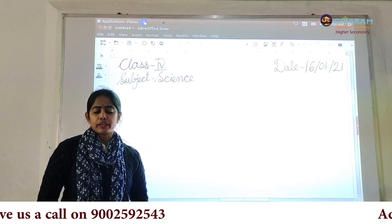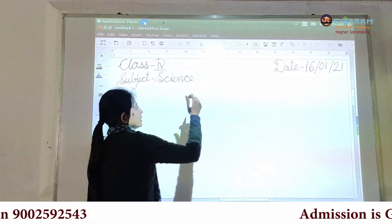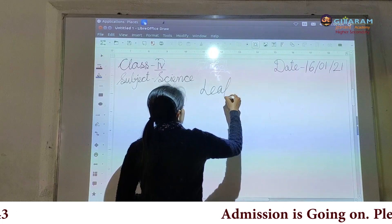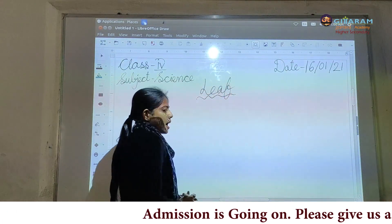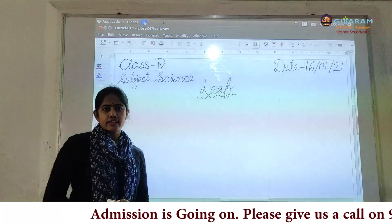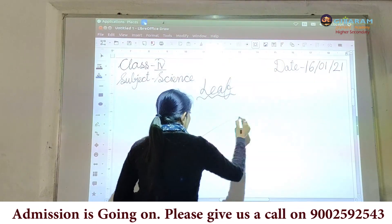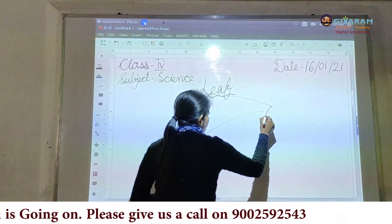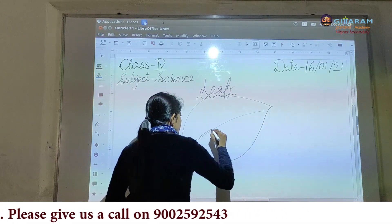Today our topic is the leaf. Leaf is the part of the shoot system. I am drawing a leaf on the board — you also draw in your copy.